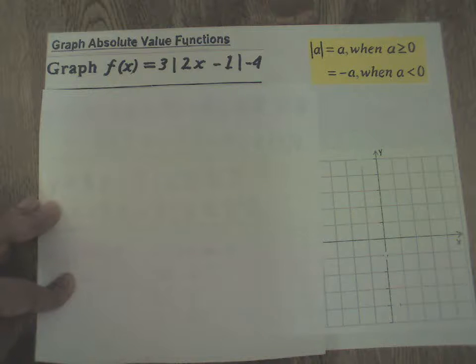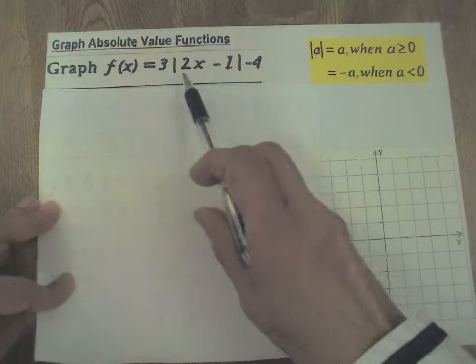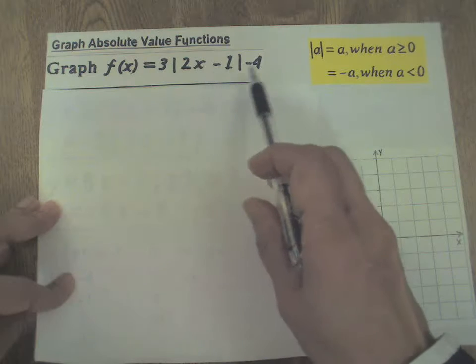Let's review how to graph absolute value functions. If you are asked to graph f(x) = 3|2x - 1| - 4, the first thing you need to do is simplify that absolute value part using this definition.